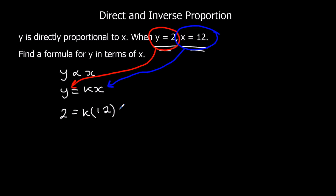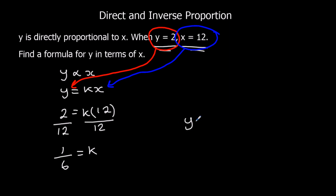To find k, we're going to divide both sides by 12, because we've got k times 12. To get rid of the times, we do the opposite, which is divide. So we divide both sides by 12, and what we get is one sixth equals k. So k is one sixth. That means our formula for y in terms of x is y equals one sixth of x. We could then use that formula to work out what y is for a given value of x, or what x is for a given value of y, just by substituting them in.